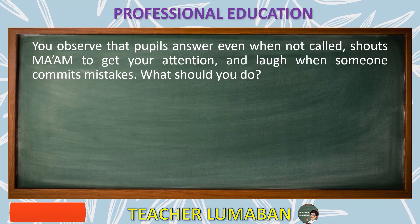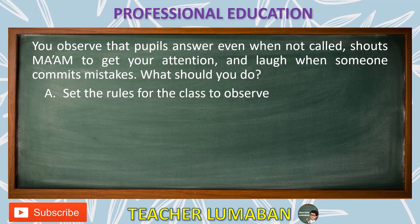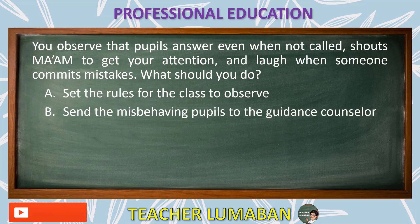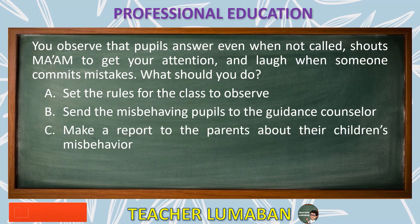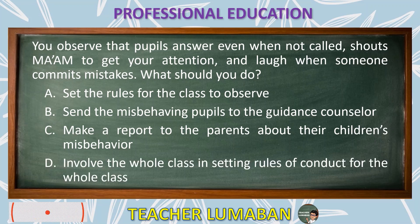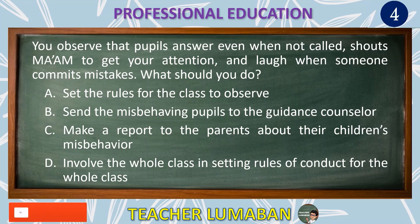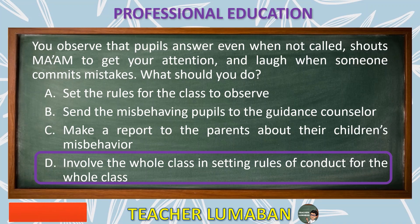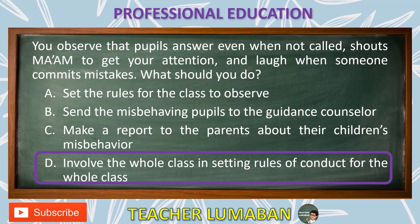You observe that pupils answer even when not called, shout ma'am to get your attention, and laugh when someone commits mistakes. What should you do? Letter A: Set the rules for the class to observe. Letter B: Send the misbehaving pupils to the guidance counselor. Letter C: Make a report to the parents about their children's misbehavior. Letter D: Involve the whole class in setting rules of conduct for the whole class. The correct answer is Letter D. You should involve the whole class in setting rules of conduct for the whole class.